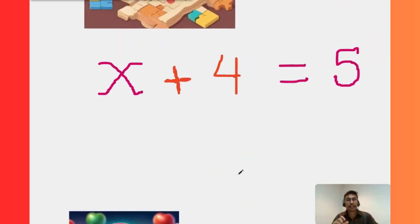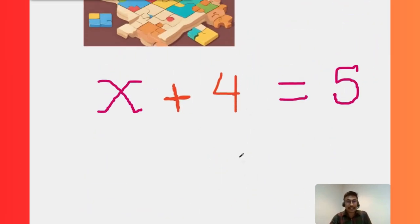You had four and your friend gave you something more, and now you have five. So if we can solve this, we can get that x plus 4 gives us 5. So what number, if you add to 4, equals 5?